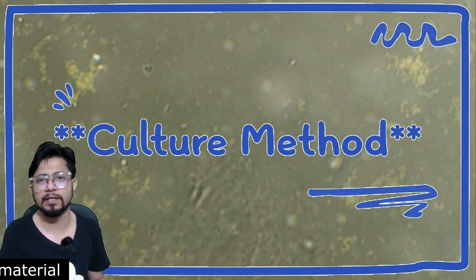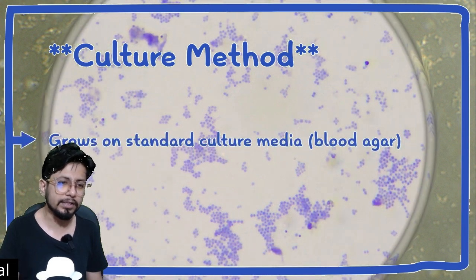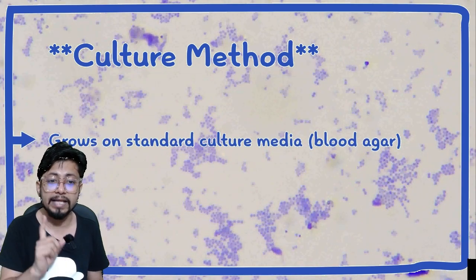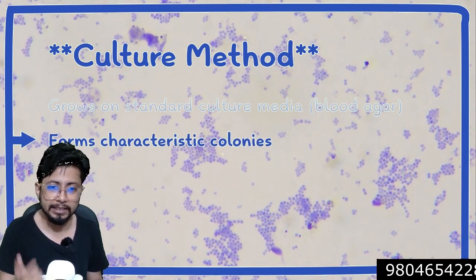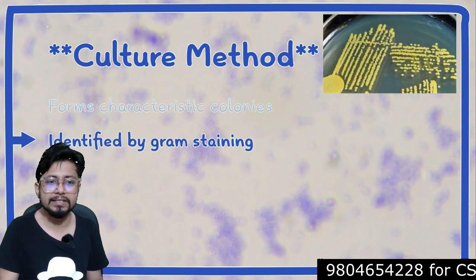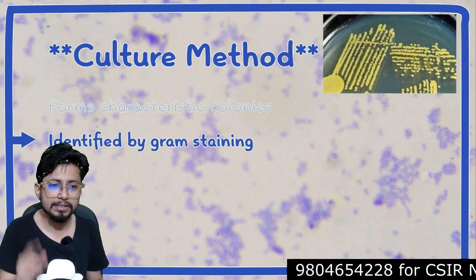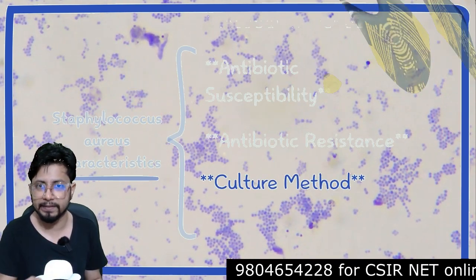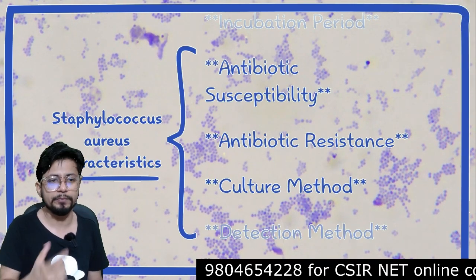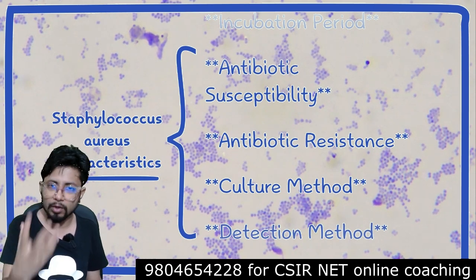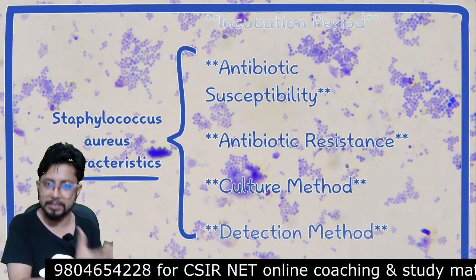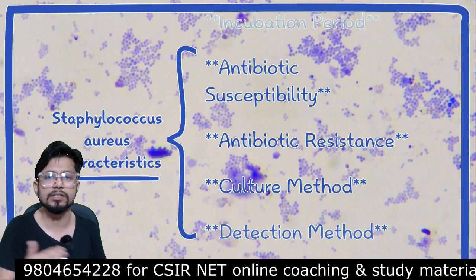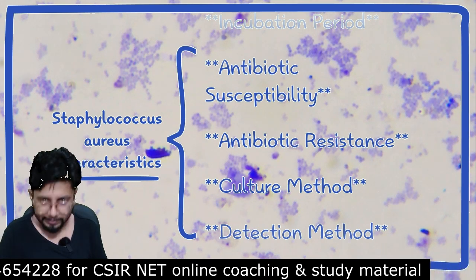For culture methods, Staphylococcus aureus grows on standardized blood agar media. It forms characteristic colonies and is identified by the gram staining method, which allows us to distinguish whether a colony is formed by Staphylococcus aureus or by another Staphylococcus species.